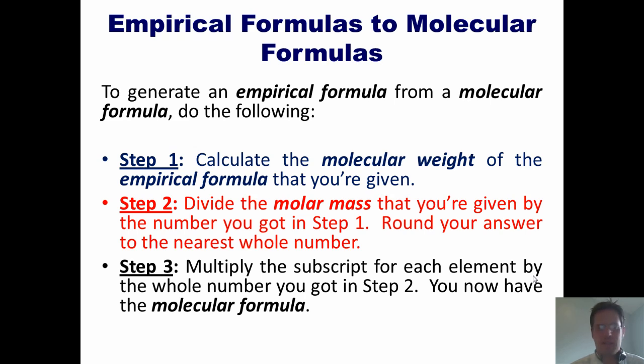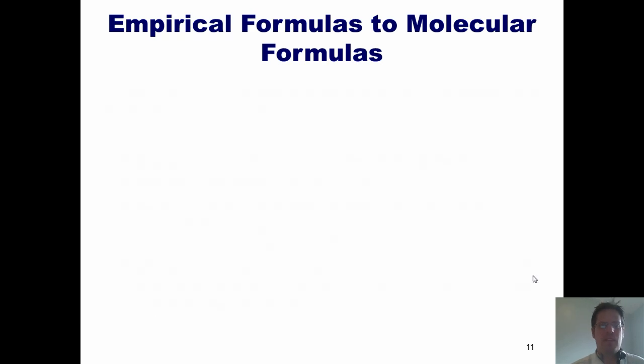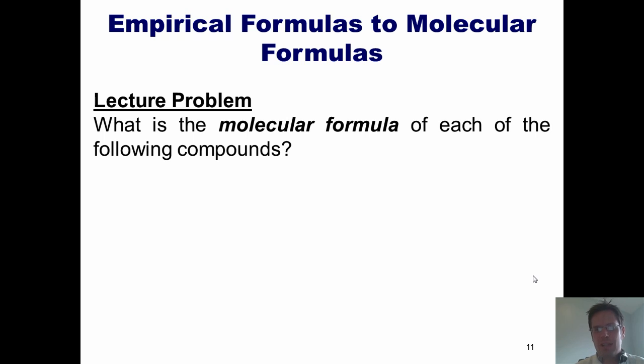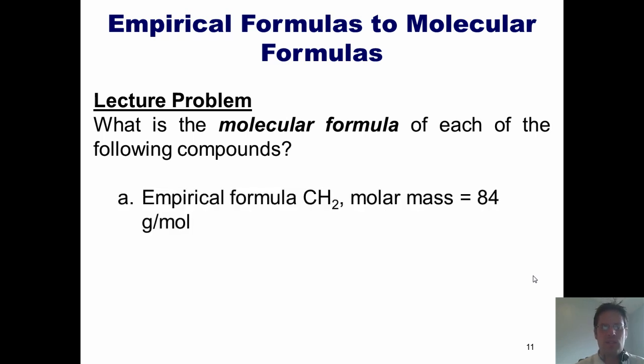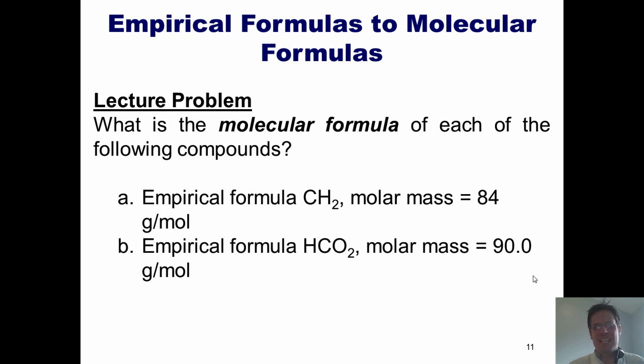Confused? Don't worry. I'll show you an example. In this problem, I'm asked, what is the molecular formula of each of the following compounds? A is a compound whose empirical formula is CH2 and molar mass is 84 grams per mole. And B, empirical formula HCO2 and molar mass is 90 grams per mole. Now, I'm not going to do A for you. I'll let you tackle it on your own.